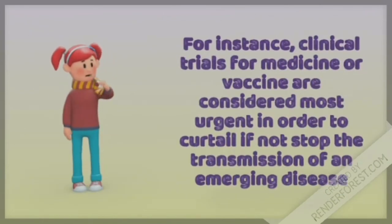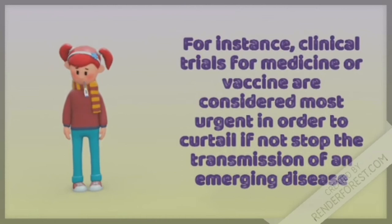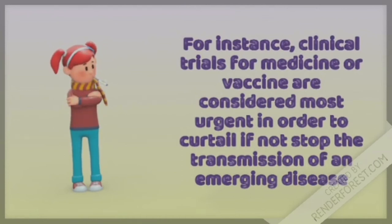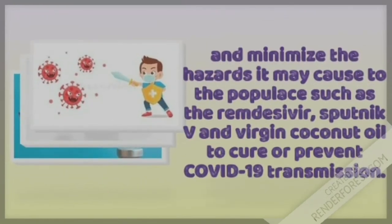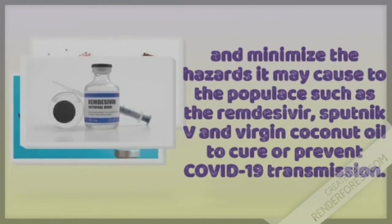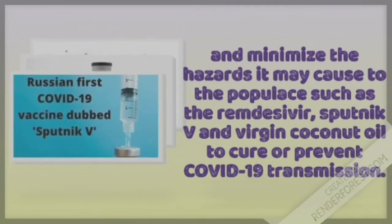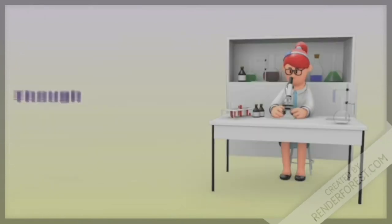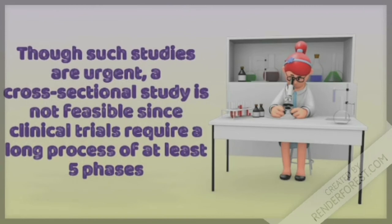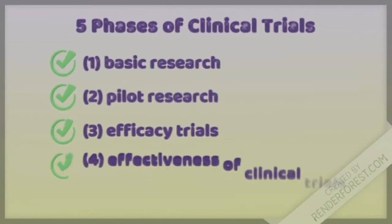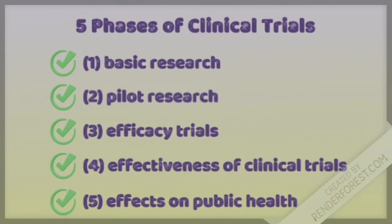For instance, clinical trials are considered most urgent in order to curtail if not stop the COVID disease and minimize the hazards it may cause to the population, such as remdesivir, Sputnik V, and virgin coconut oil to cure or prevent COVID-19. Though such studies are urgent, a cross-sectional study is not feasible since clinical trials require at least a long process of at least 5 phases such as basic research, pilot research, efficacy trials, effectiveness of clinical trials, and effects on public health.